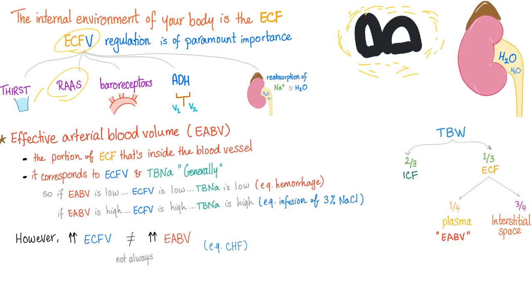Renin-angiotensin-aldosterone system, baroreceptors found in the aortic arch and in the carotid sinus and in many other places — but those are the two major ones. ADH acting on V1 and V2 receptors, as well as reabsorption of salt and water by your amazing kidney.